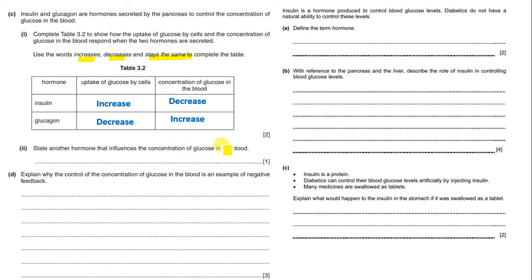Another hormone that influences the concentration of glucose in the blood, outside of insulin and glucagon, is adrenaline. In a fight-or-flight situation, adrenaline determines how much glycogen is converted to glucose for further respiration. Now explain why the control of the concentration of glucose in the blood is an example of negative feedback.